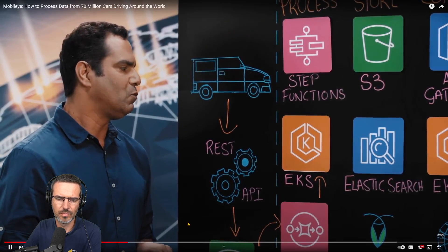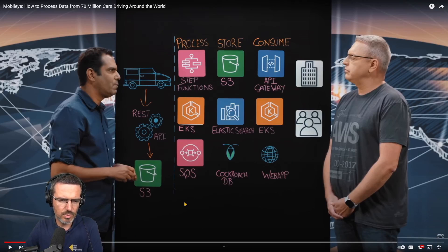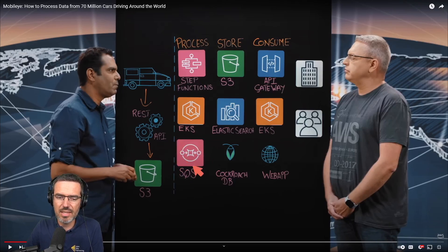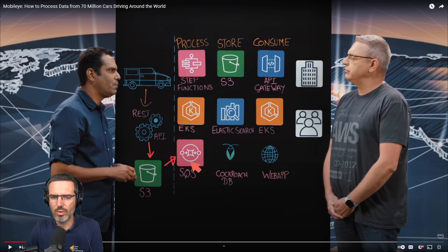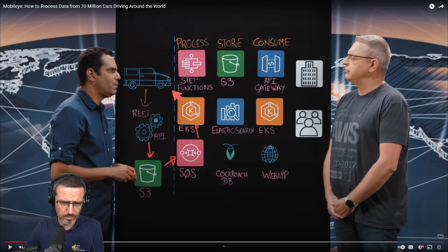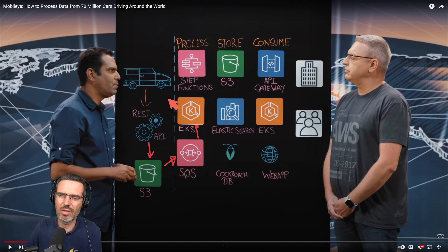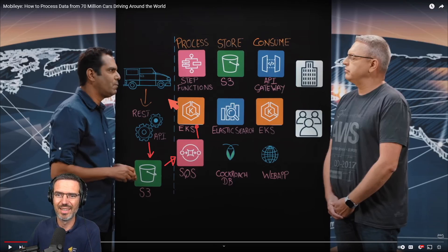Going back a bit: SQS — Simple Queue Service — gets a notification whenever a file is dropped into S3. An event is automatically created for the queue, and workers on the other end consume messages from it — a very typical publish-subscribe model. As mentioned, these workers scale depending on traffic. At night there won't be much car traffic, but in the morning and evening when people are commuting, there will be a lot of data flowing into Dynamic RAM.